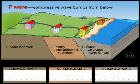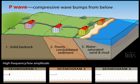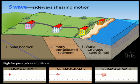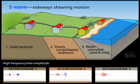The initial P wave arrives with a compressive bump and rarely causes much damage. The slower shearing S wave introduces a side-to-side motion that can throw loose objects to the floor and may crack walls.